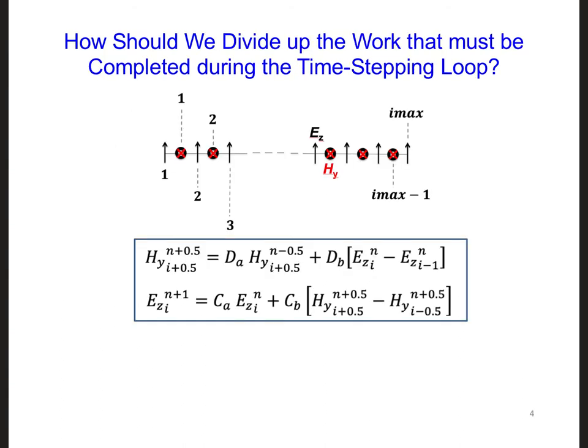To figure out how we should divide up the EZ and HY updates, we should look at the update equations that we are applying to all of our field components across the grid and over time. If we examine these equations, we can see that in order to update any field component, we only need the value of the component at the same position that we're updating and then only at the two neighboring positions as well.